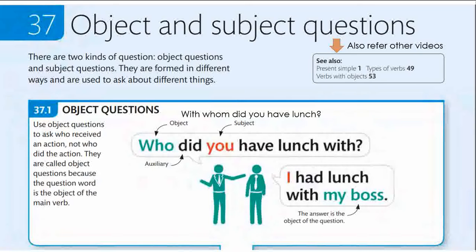When you construct a question, you underline the verb and ask the question 'who,' and you get some answer which is definitely there in the statement — at the end of the statement. Those statements are known as object questions.